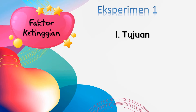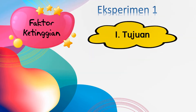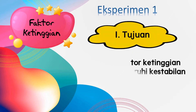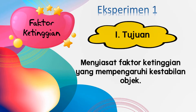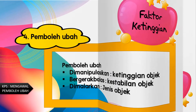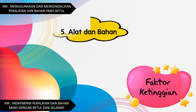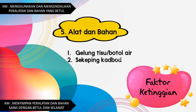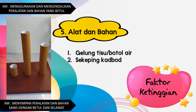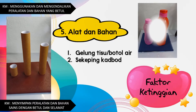Bagi eksperimen pertama, tujuannya adalah menyiasat faktor ketinggian yang mempengaruhi kestabilan objek. Alat dan bahan yang digunakan adalah gelung tisu, botol air dan sekeping kabot. Kemahiran manipulatif dalam amali ini ialah mengguna dan mengendalikan peralatan dan bahan dengan betul, serta menyimpan peralatan dan bahan sains dengan betul dan selamat selepas digunakan.